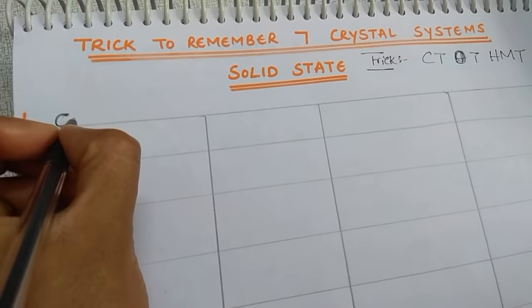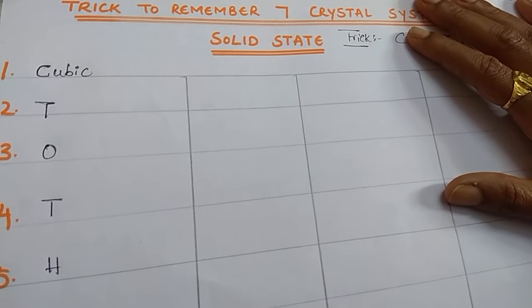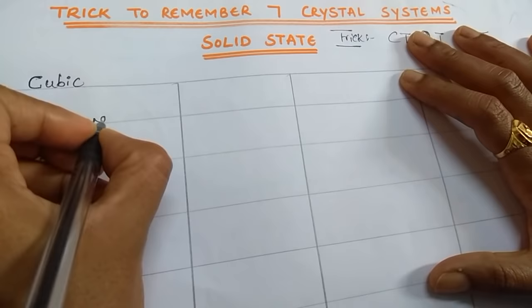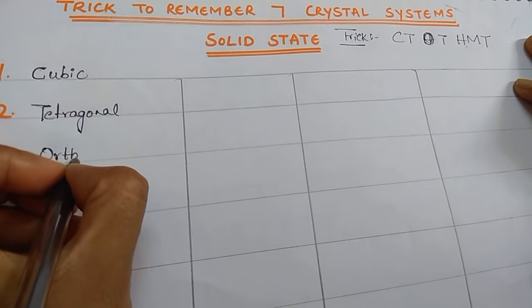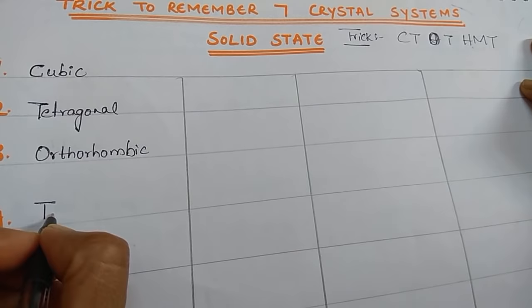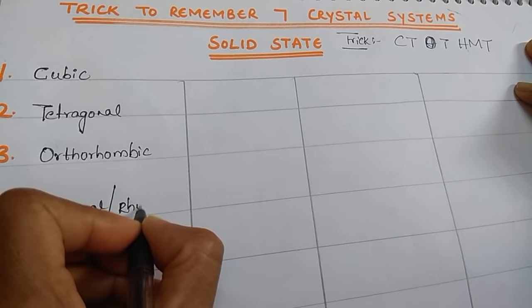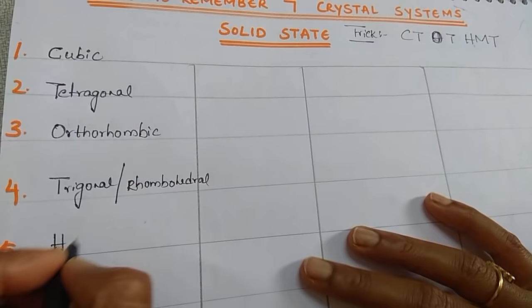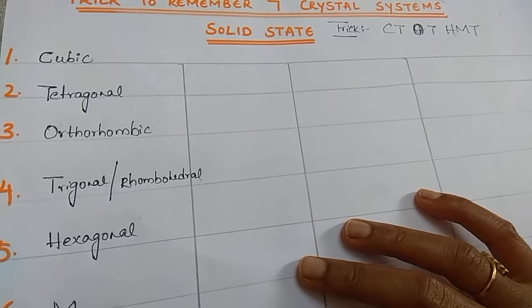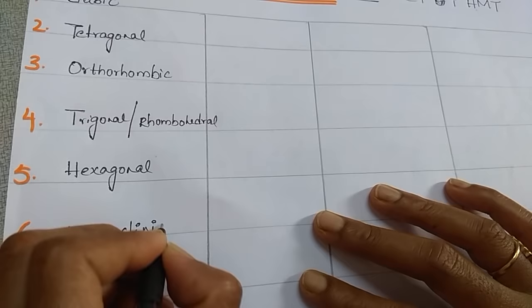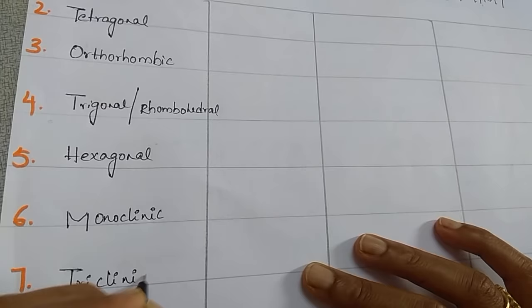C stands for Cubic. T stands for Tetragonal. O stands for Orthorhombic. T stands for Trigonal, which is also known as Rhombohedral. H stands for Hexagonal. M stands for Monoclinic. And the last T stands for Triclinic. These are the seven crystal systems.